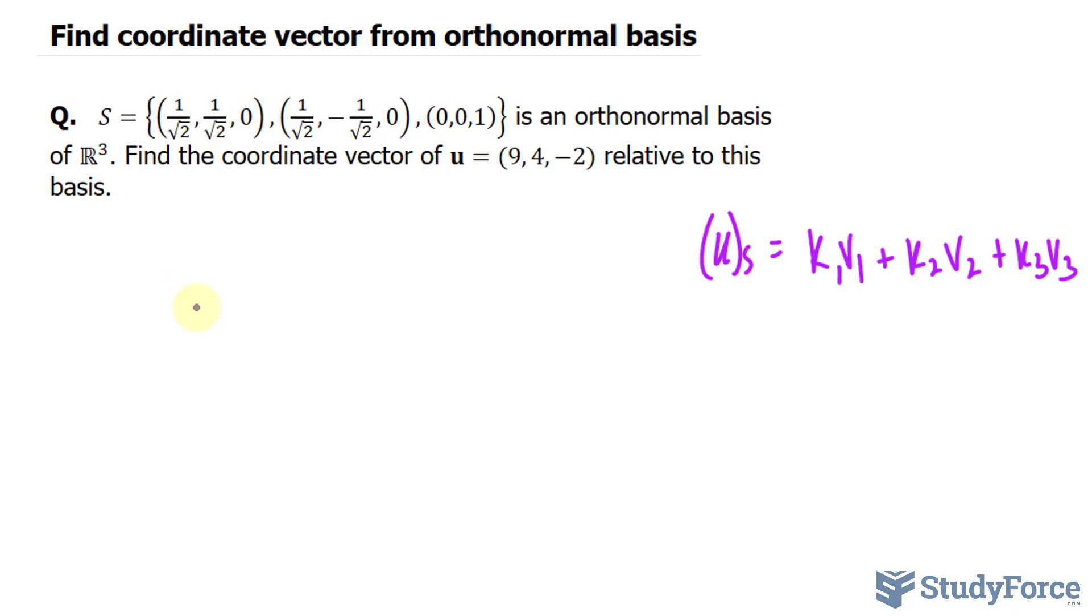So here's how it works. Once again, I'll say that the coordinate vector u relative to S is equal to—since we have three vectors, we'll start with this very first one. I'll call this v₁, v₂, and v₃, just for reference sake. And what you do is you find the inner product of each of these vectors with u.